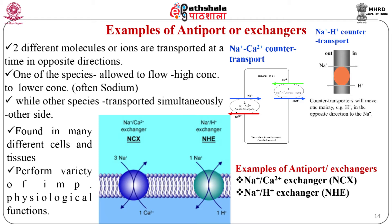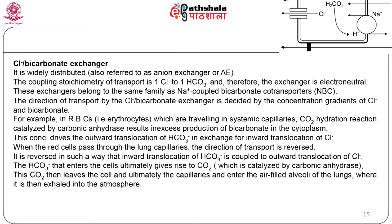The Na+/H+ exchanger is a ubiquitously found exchanger that plays an important role in regulation of cytoplasmic pH. The Na+ electrochemical gradient is utilized by the exchanger to extrude H+ from the cell, with 1 Na+ to 1 H+ coupling stoichiometry; thus NHE is electroneutral. The Cl-/bicarbonate exchanger is widely distributed and also referred to as anion exchanger or AE. The coupling stoichiometry of transport is 1 Cl- to 1 HCO3-, and therefore the exchanger is electroneutral.